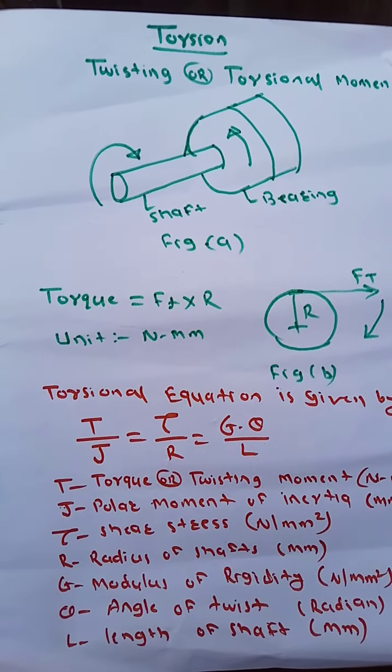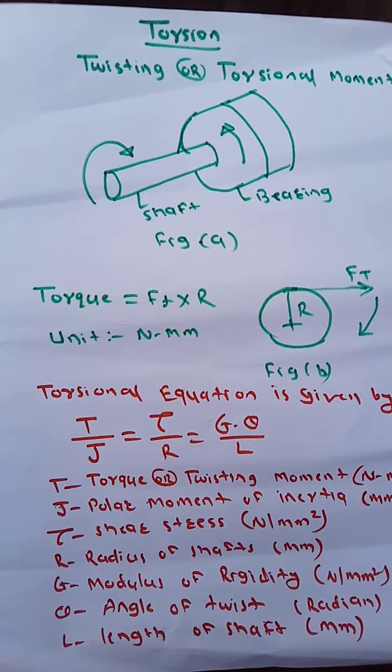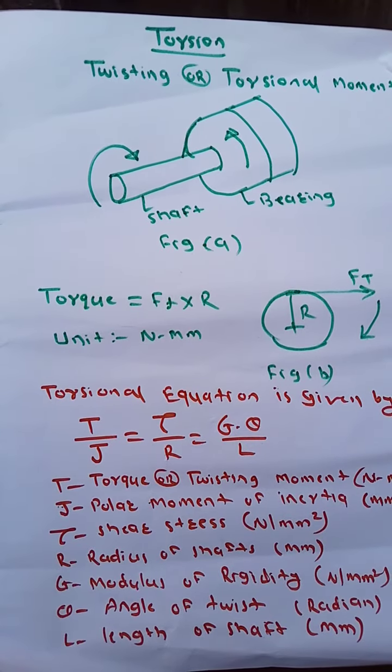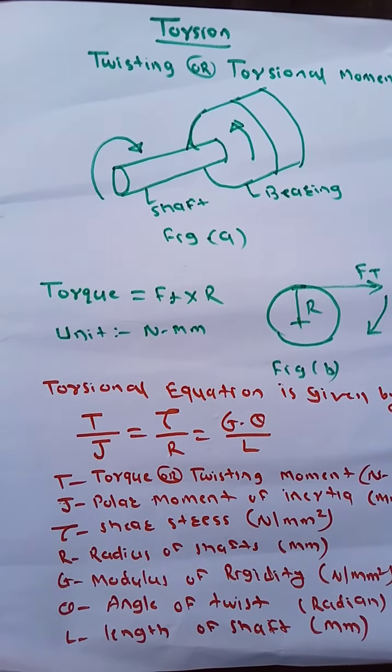We have the torsional equation, and that is given by T upon J equals to tau upon R equals to G theta upon L.